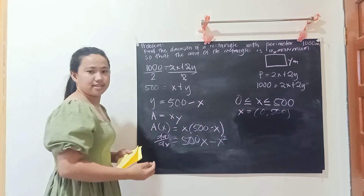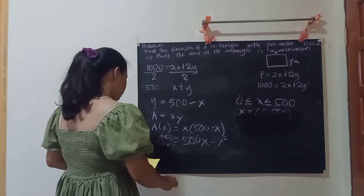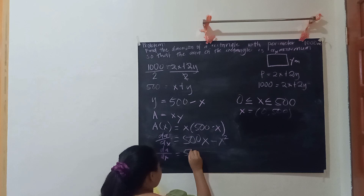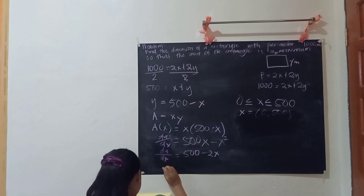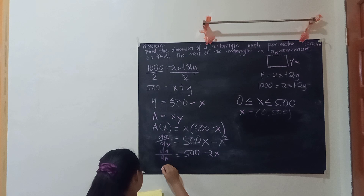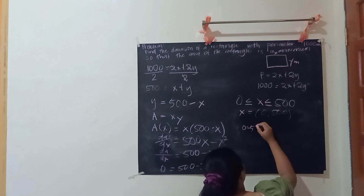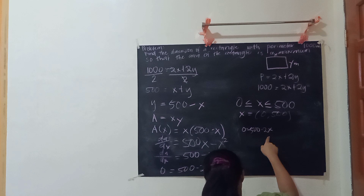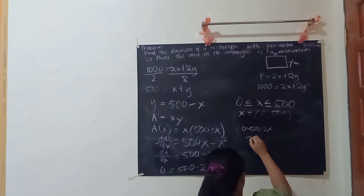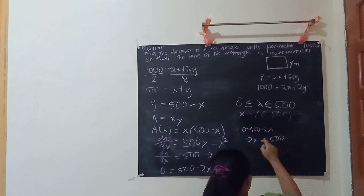So dA/dx equals 500 minus 2x. Set dA/dx equal to 0: 0 equals 500 minus 2x. Transpose negative 2x, so we have positive 2x equals 500. Divide both sides by 2, giving x equals 250.